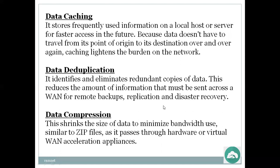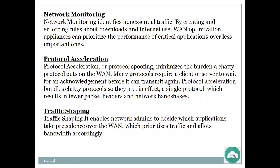Network monitoring identifies non-essential traffic by creating and enforcing rules about downloads and internet use. WAN optimization appliances can prioritize critical application performance over less important ones. Monitoring gives benchmark values and can find out which applications are causing unwanted downloads. We can go create rules in the firewalls to restrict users from going to YouTube repeatedly or downloading unnecessary content.